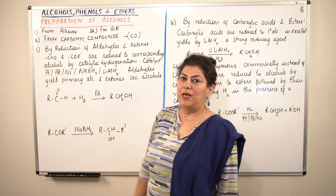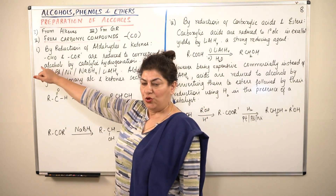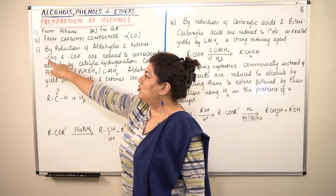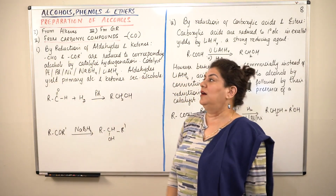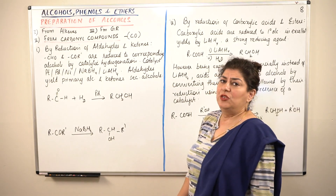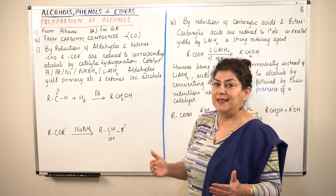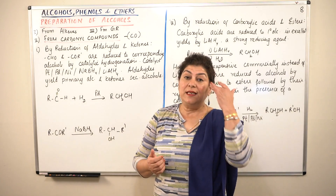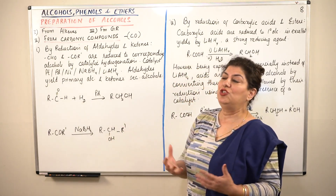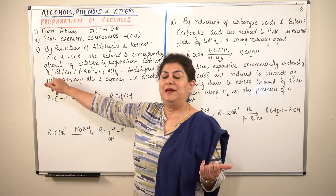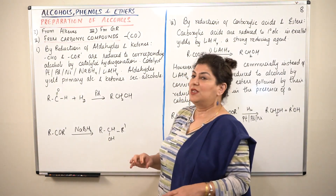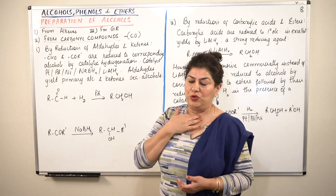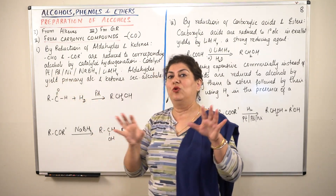Aldehydes are those which have the functional group CHO and ketones would be COR'. Both have the C=O bond. They are reduced to the corresponding alcohols by catalytic hydrogenation. Hydrogenation means addition of hydrogen and catalytic means that you need a catalyst. The catalysts used are usually metals — platinum, palladium and nickel are usually used as catalysts.